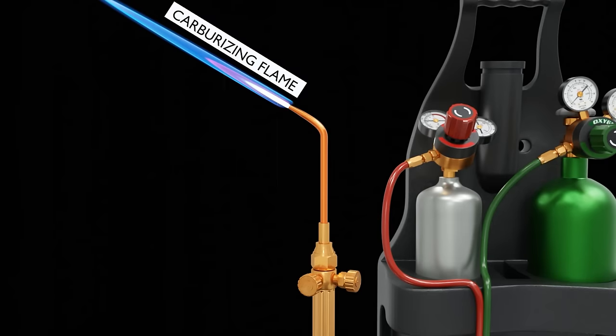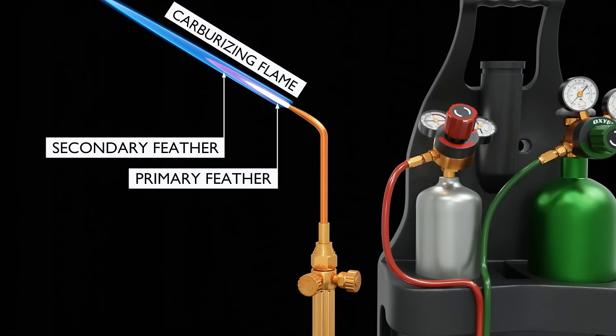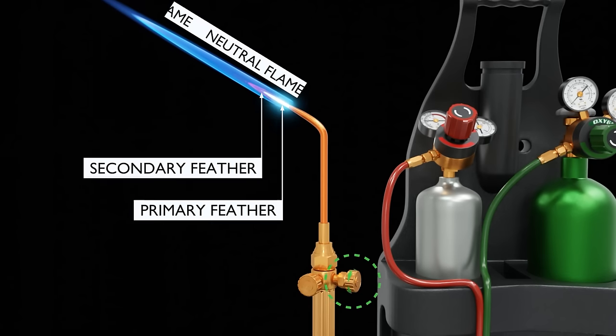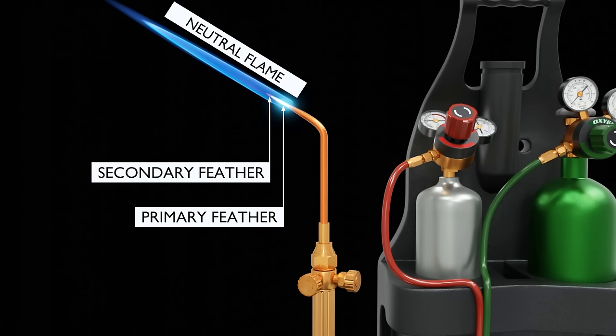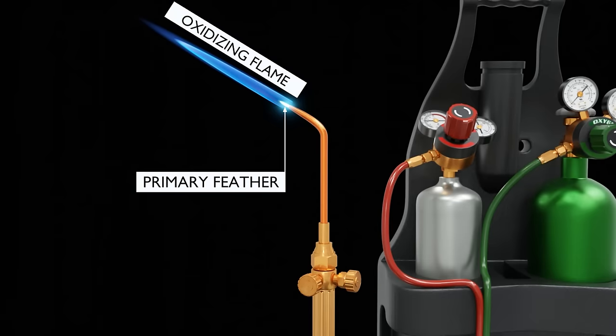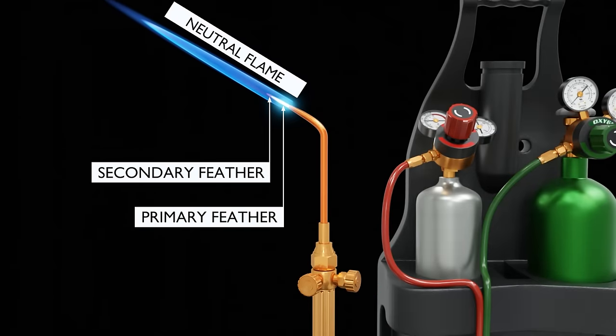Next, mix in the oxygen. A carburizing flame has a primary and secondary feather. A neutral flame, which is what we're typically looking for, or slightly carburizing, has a very small secondary feather. An oxidizing flame has no secondary feather at all, and we want to avoid that one. Try to get as close to a neutral flame as possible.